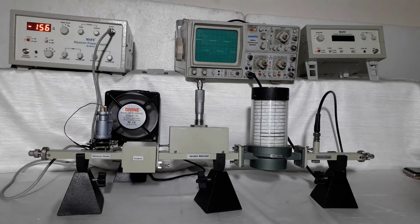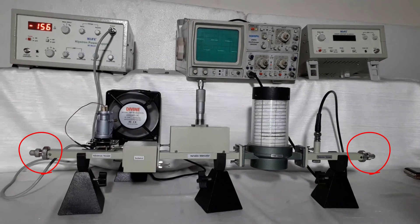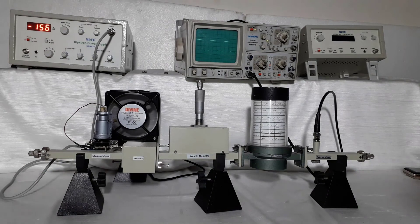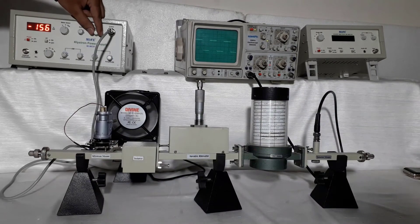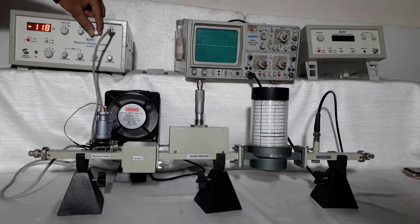You can also use plunger of klystron mount and detector mount for getting maximum output. You will observe that you will get square waveform two or three times in all over span of repeller voltage.